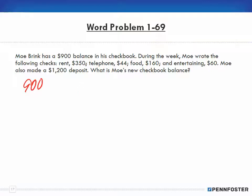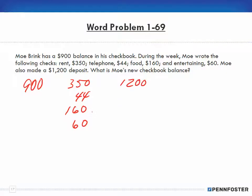Mo has rent for $350, telephone for $44, food for $160, and entertaining for $60. He also made a deposit of $1,200 — that's money going back in. Adding up the checks: $350 + $44 + $160 + $60 = $614 total for checks. So I'm going to subtract $614 from the beginning balance of $900.